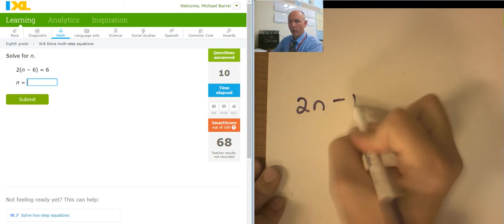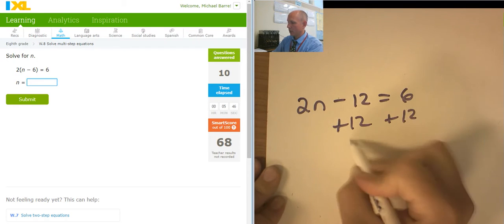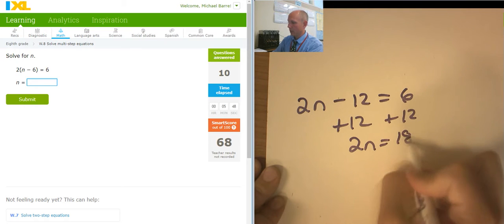2n minus 12. I started with the distribution. Adding 12 to both sides. 2n equals 18. So n equals 9.